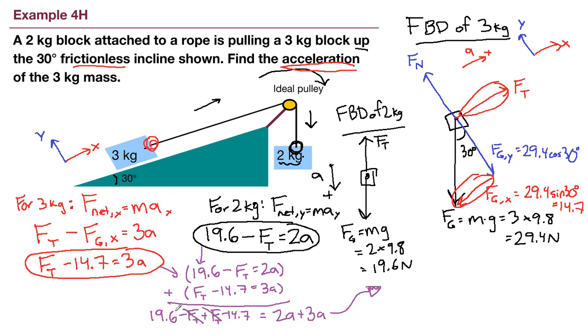We have 19.6 minus 14.7. So we'll write that out in our calculators. We would get 4.9 and then 2a plus 3a is 5a. So we divide both sides by five and we get 0.98 meters per second squared is equal to our acceleration a that we're trying to solve. Problem complete.